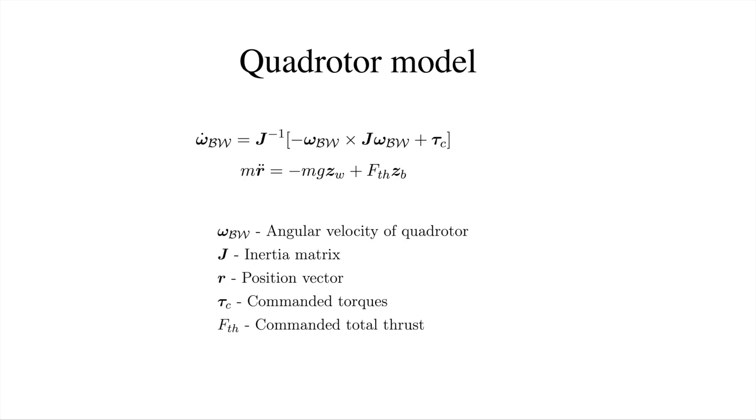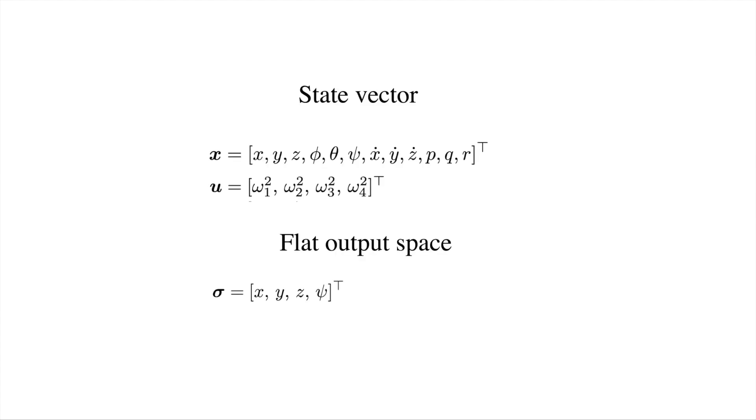The entire quadrotor model can be given as follows. First, we have the angular dynamics, and then we have the positional dynamics. The state describing the entire system, including all of the state variables and the inputs, is 16-dimensional. The output space in which the quadrotor is differentially flat is 4-dimensional. Using the differential flatness property of the quadrotor, we will be able to convert this 4-dimensional trajectory into a full 16-dimensional state trajectory.